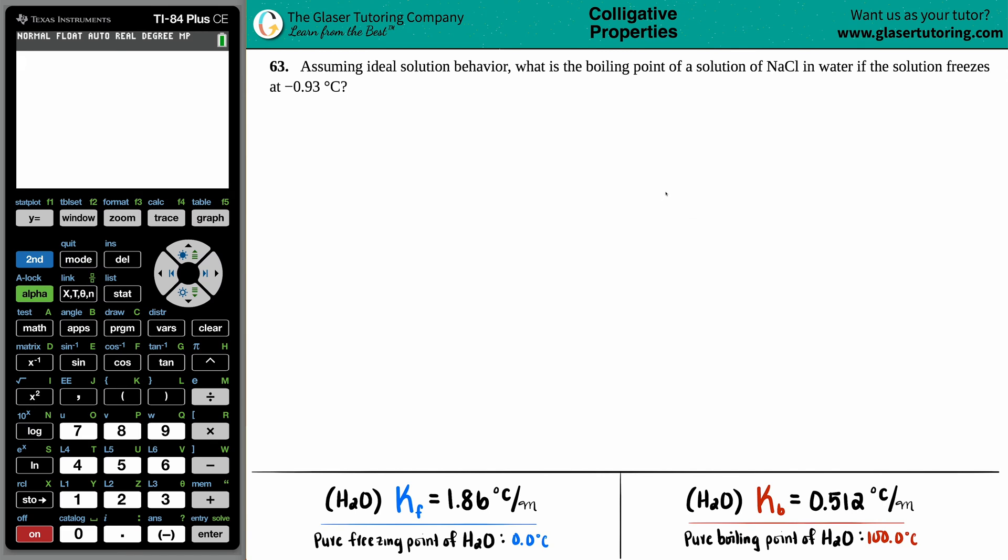Number 63. Assuming ideal solution behavior, what is the boiling point of a solution of NaCl in water if the solution freezes at negative 0.93 degrees Celsius? Okay. We only got one number here, right?